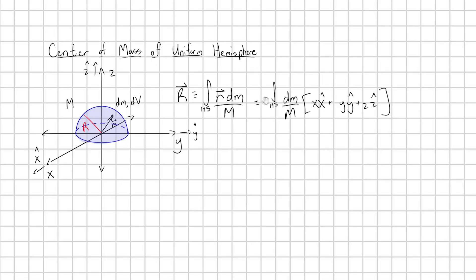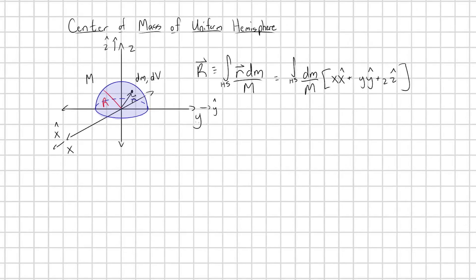Some of these terms are immediately going to go to zero. Which components of my center of mass are going to be zero? Because this hemisphere is rotationally symmetric about the z-axis — it has an equal distribution of mass in the x and y directions — the center of mass in x is just going to be on the origin, and same with y.